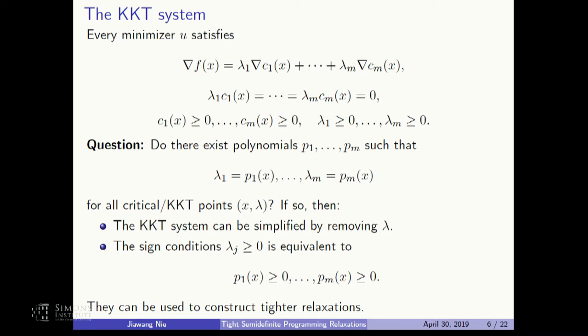If x is given, the KKT equation is linear in lambda, so we might think: if we have a linear equation in lambda, we just invert it and get a rational representation. But in optimization I don't like rational functions — I want a polynomial. Can lambda be expressed as a polynomial function over the critical points? If this is true, there are big advantages: the KKT conditions can be simplified, we don't need lambda explicitly, we just plug it in and eliminate variables. Also, we can use the sign condition — lambda must be nonnegative — so we can impose new constraints. In polynomial optimization, more constraints means better relaxations.